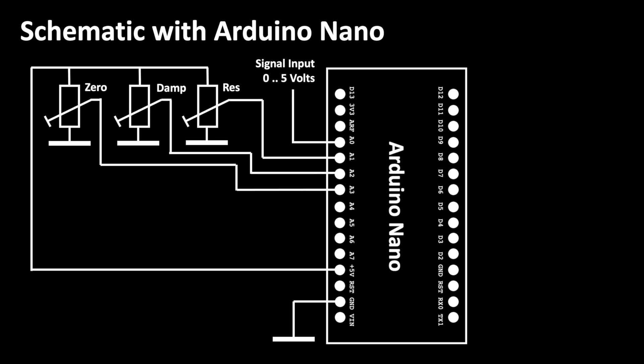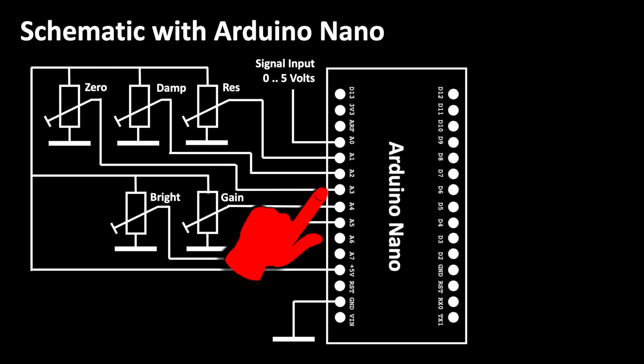We do exactly the same for the zero adjust, the brightness for the LED lighting and for the gain. We connect the trimmers to the inputs A3, A4 and A5 accordingly.